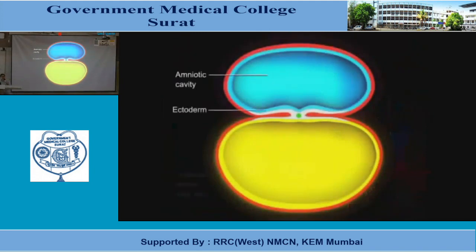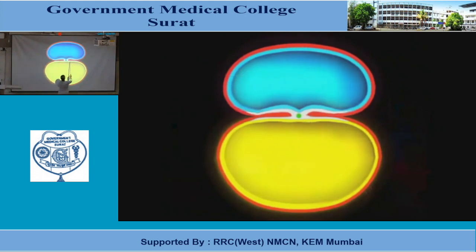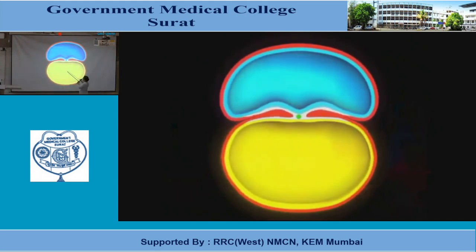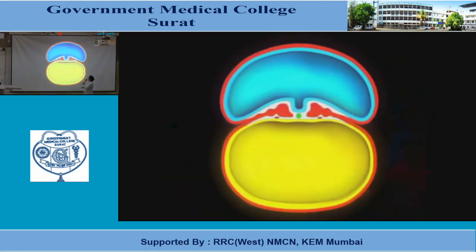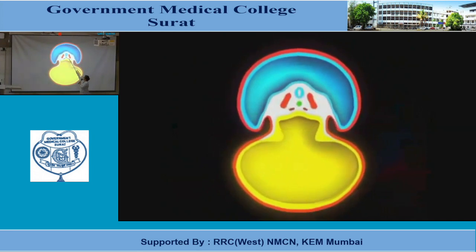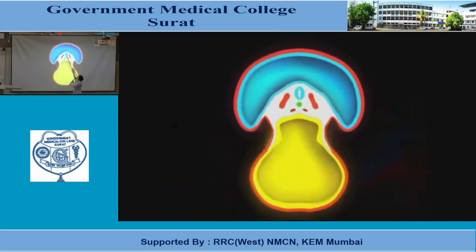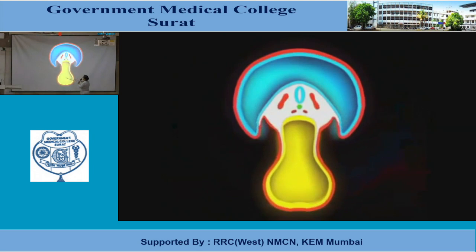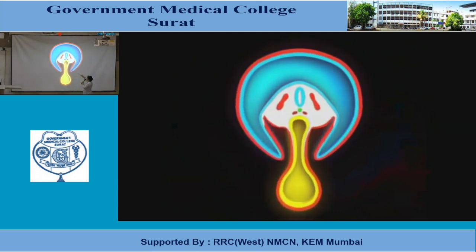This is the coronal section. In the coronal section you can see mesoderm, notochord, yolk sac, amniotic cavity. This is the paraxial mesoderm, notochord, neural tube, paraxial mesoderm. This is your vitelline intestinal duct and umbilical vesicle. Lateral folding of the embryo has occurred.